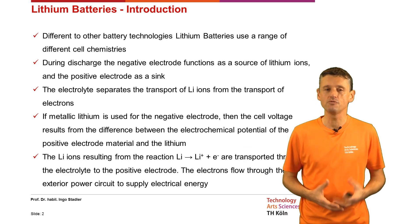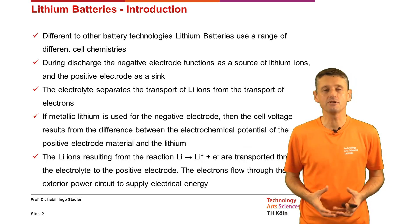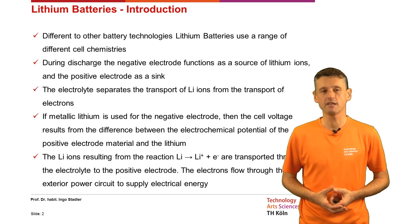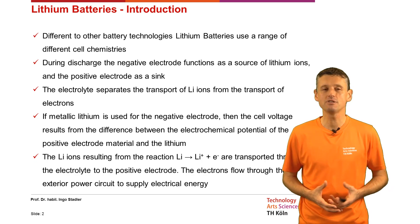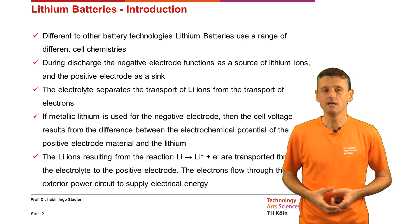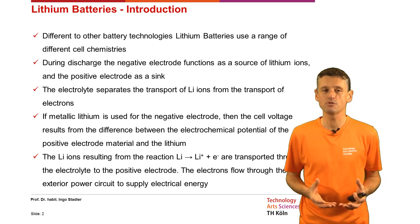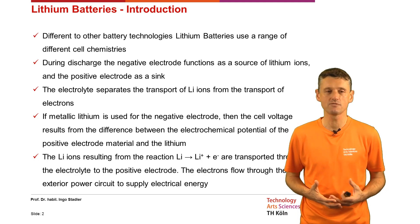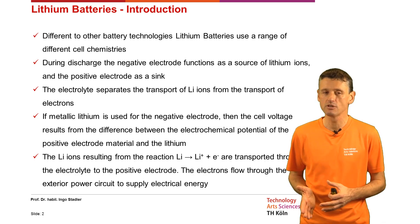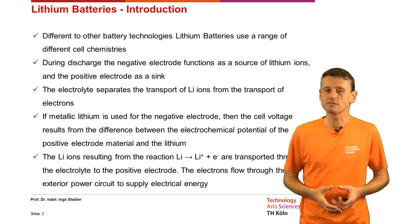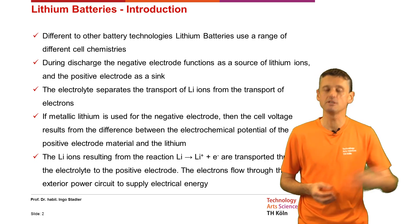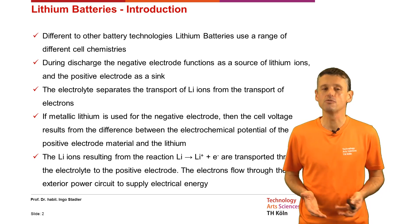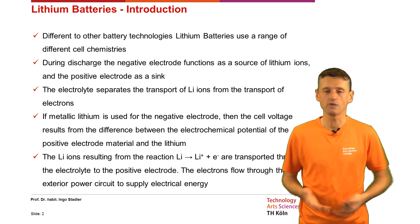Coming to Lithium batteries, we start with an overview and the history. Different from other battery technologies, Lithium batteries use a range of different cell chemistries. During discharge, the negative electrode functions as a source of Lithium ions and the positive electrode as a sink for the Lithium ions. The electrolyte separates the transport of Lithium ions from the transport of the electrons. If metallic Lithium is used for the negative electrode, the cell voltage results from the difference between the electrochemical potential of the positive electrode and the Lithium. The electrons flow through the exterior power circuit to supply electric energy to any appliances.